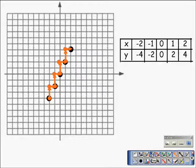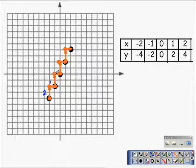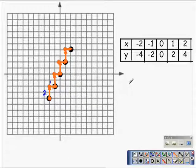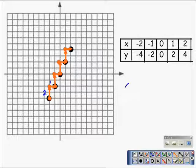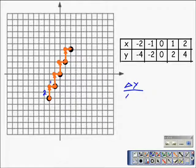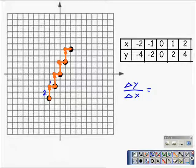And each time, the change in the y's is 2. We go up 2 and the change in the x is 1. We go to the right 1. So in this particular case, the slope of this line is represented by the change in y over the change in x, which as we already determined, is 2 over 1, or it simplifies to the whole number 2.